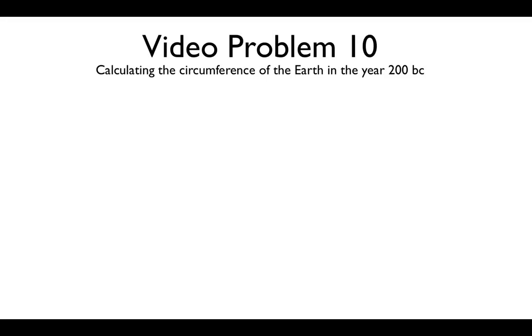In this video problem we're going to focus on the story of Eratosthenes, who famously came up with a remarkably accurate estimation for the circumference of the earth in the year 200 BC, over 2,000 years ago.